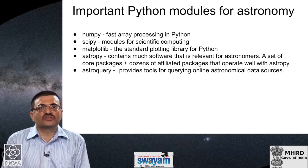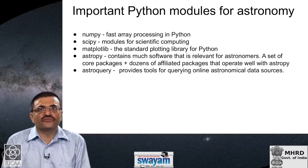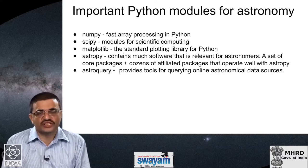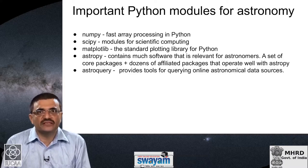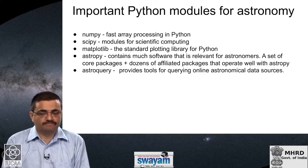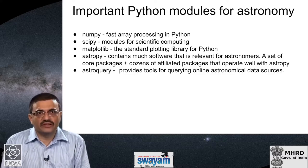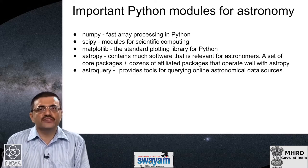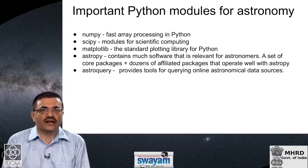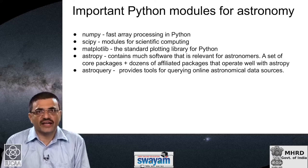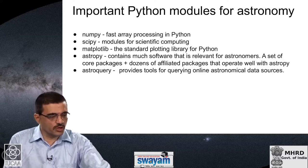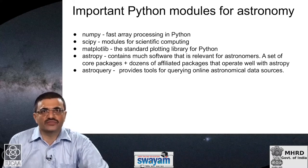Coming to core astronomy, the most important package for astronomers is something known as astropy. It contains a lot of software relevant for astronomers — a set of core packages providing core functionality, and also dozens of affiliated packages that operate well with astropy. Last but not least is a package called astroquery, which provides tools for querying online astronomical data sources. From the point of gathering data from astronomical data archives, astroquery is the most important module, and it is also an affiliated package with astropy.